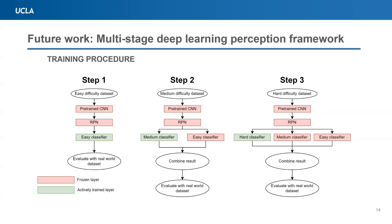Step 2 follows a similar process as step 1 with the following change. The additional medium classifier will be added, and the architecture is trained on the medium difficulty dataset, with only the medium classifier layer being actively trained. The predicted result of the medium classifier and the easy classifier will be combined before being evaluated with the real-world dataset.